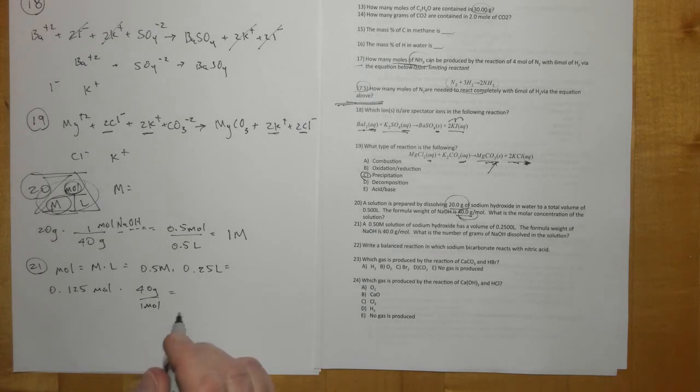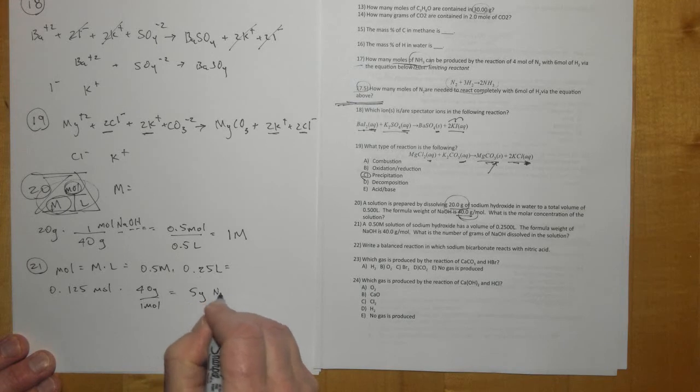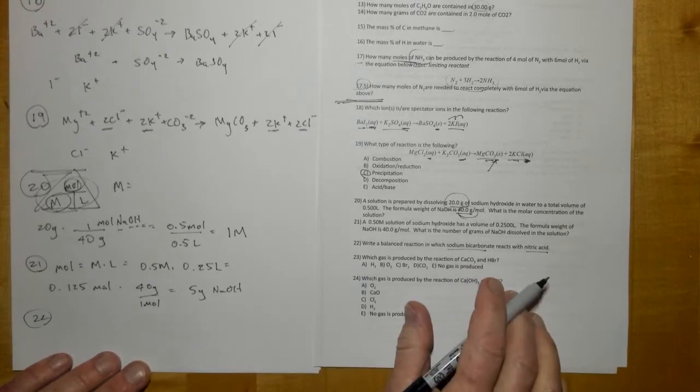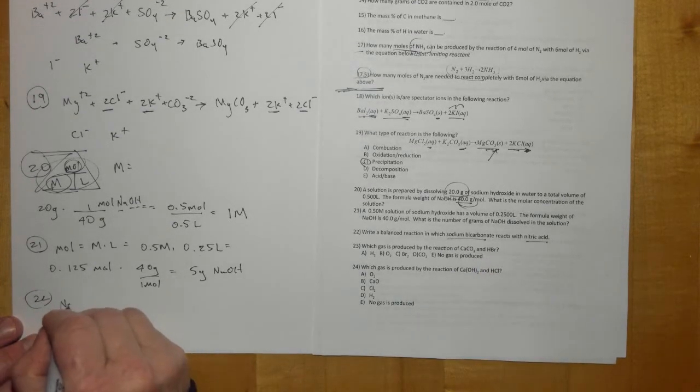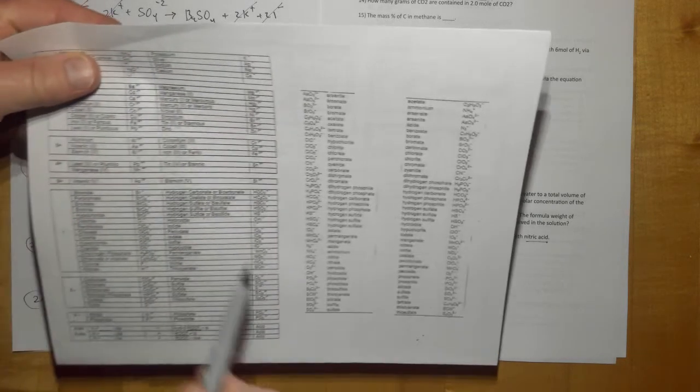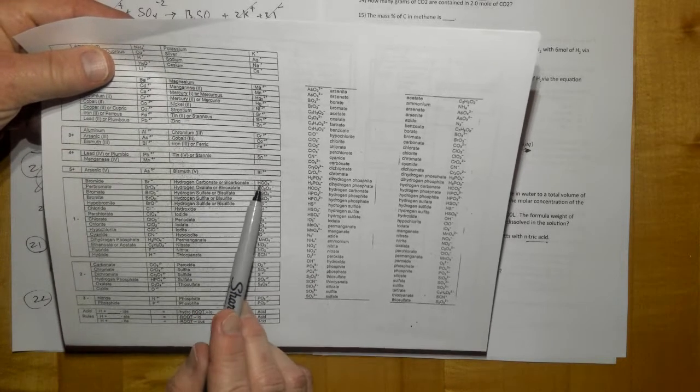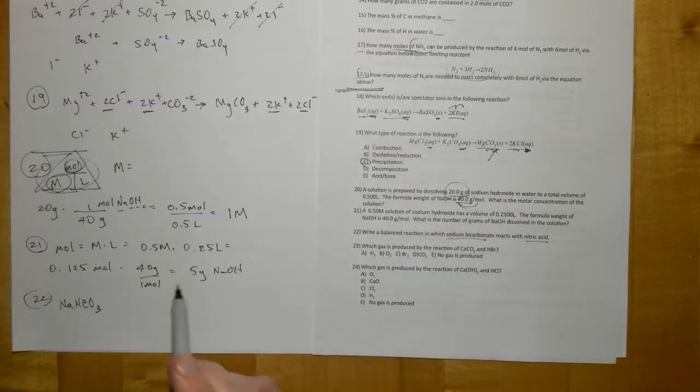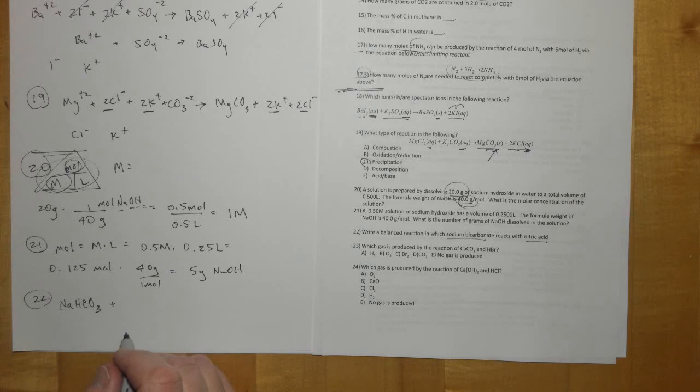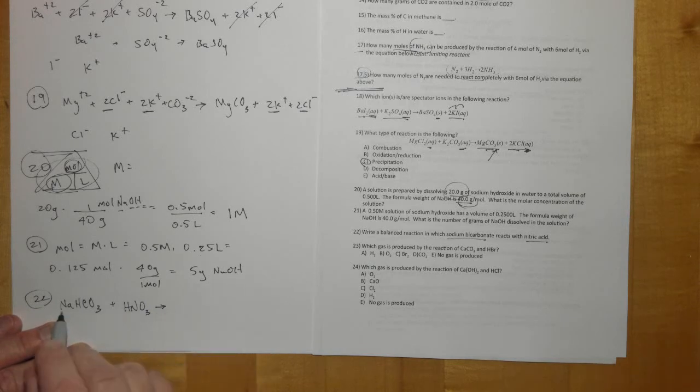22: write the balanced reaction in which sodium bicarbonate reacts with nitric acid. So sodium bicarbonate is NaHCO₃. Bicarbonate ion you can find on the back here, HCO₃⁻. This is going to be a special one when reacting with acids because remember bicarbonates, sulfites, hydrogen sulfites when they react with acid always form a gas. So it's a gas forming reaction.